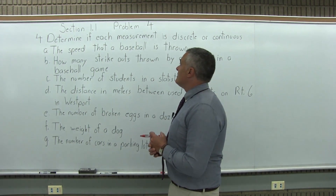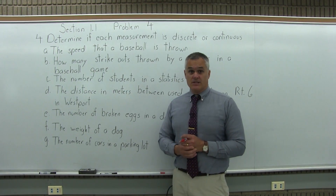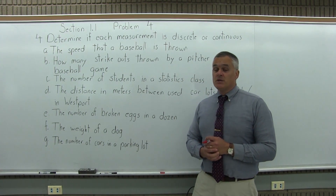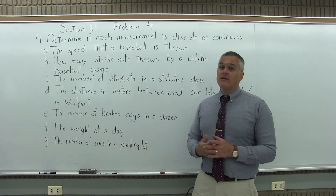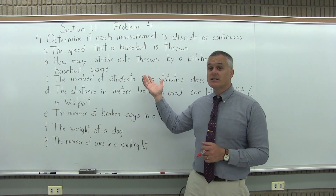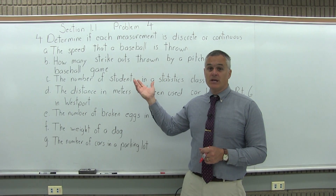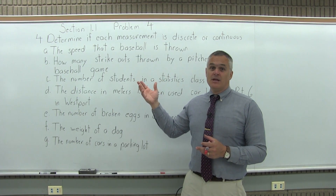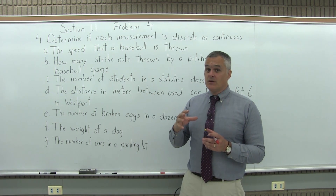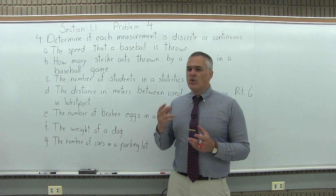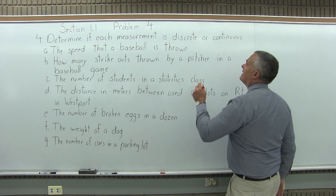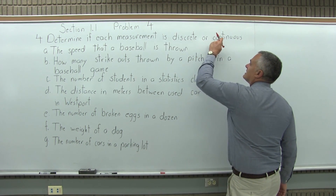Part A: the speed that a baseball is thrown — is it discrete or continuous? Well, for any two speeds that you could throw that baseball, you could have a speed in between. Could you throw the baseball at 86 miles per hour? Yes. 87 miles per hour? Yes. Could you be in between, say 86.3? Could you go in between 86.3 and 87? Yes. Whatever speed you can throw the baseball at, you could have a speed in between. That makes it continuous.